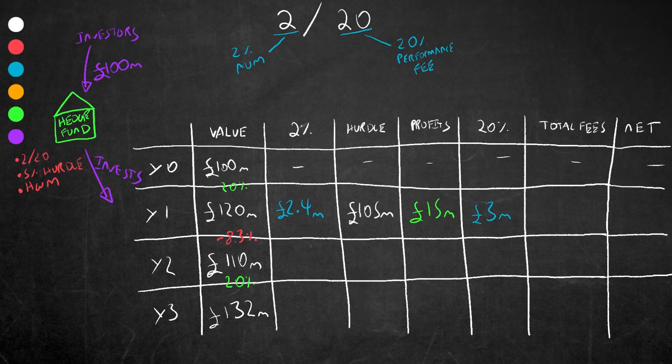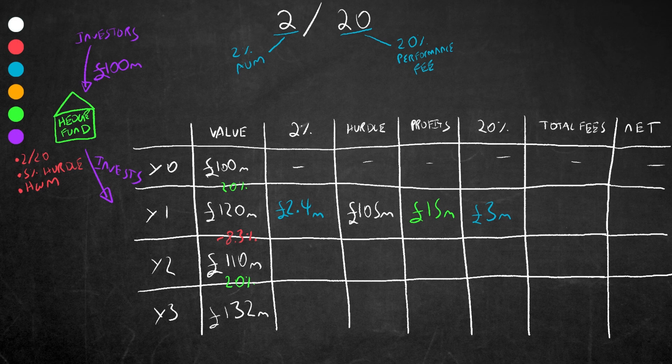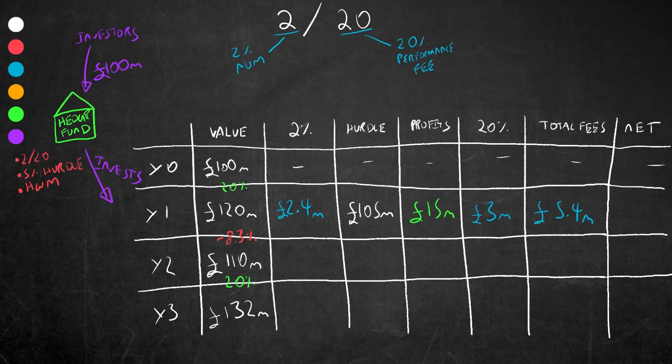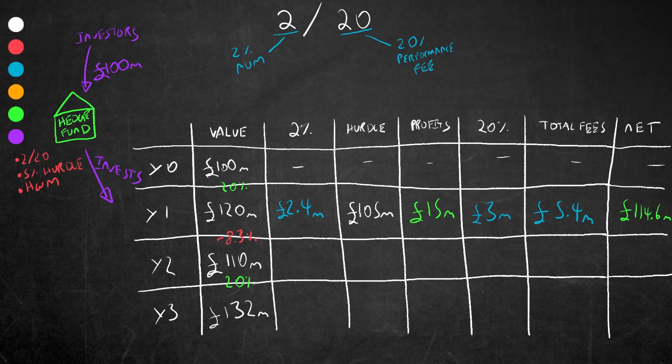These fees can be left in the fund or taken out depending on what the hedge fund wants to do. Usually the 2 percent fee is paid out to pay employees, office space, and keep the lights on, and the incentive fees remain within the fund. In year one, the total fees paid would be 3 million plus 2.4 million, which is 5.4 million. This leaves the original investors with a value of 114.6 million pounds, a 14.6 percent increase from their original 100 million pound investment.